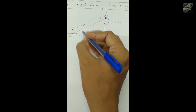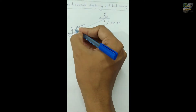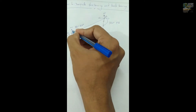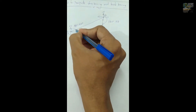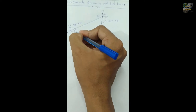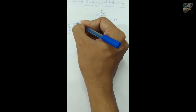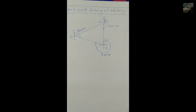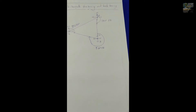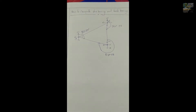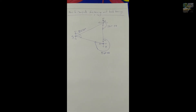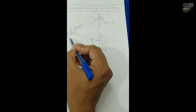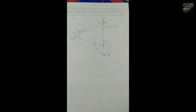You can see that the back bearing of AC is 180 degrees. So, the fore bearing of AB, fore bearing of BC, and back bearing of CB are displayed over here.